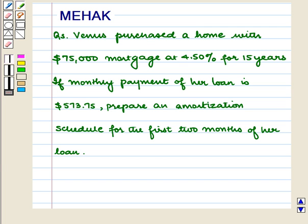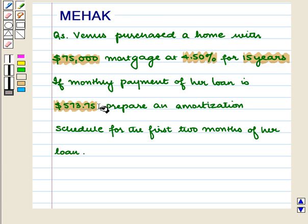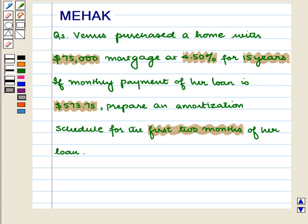Hello and welcome to the session. In this session we are going to discuss the following question: Venus purchased a home with a $75,000 mortgage at 4.5% for 15 years. If the monthly payment of her loan is $573.75, prepare an amortization schedule for the first 2 months of her loan.